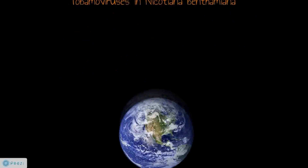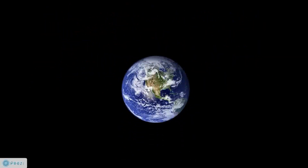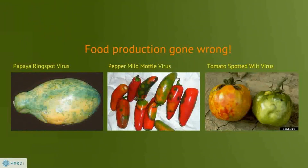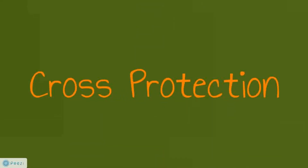Food production today faces many challenges in meeting the needs of the world's growing population. One major problem faced is the emergence of plant viruses which can wipe out entire crop plantations. Thus, we turn to an uncommon plant protection technique known as cross-protection.